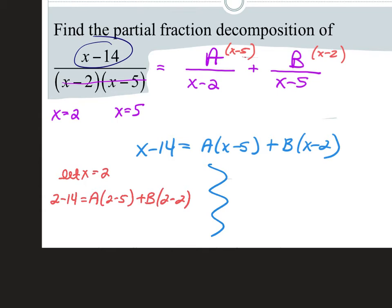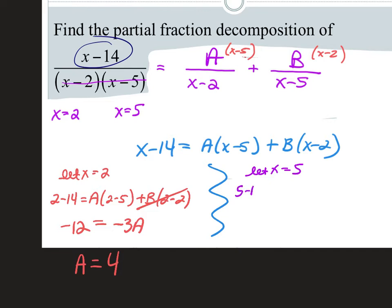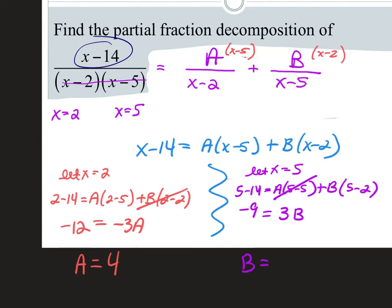Let x equal 2: 2 minus 14 equals A times (2 minus 5) plus B times (2 minus 2). Simplify: negative 12 equals negative 3A, and the B term cancels. So A equals 4. Now let x equal 5: 5 minus 14 equals A times (5 minus 5) plus B times (5 minus 2). Simplify: negative 9 equals 0 plus 3B, so B equals negative 3.